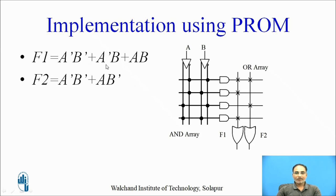The function f1 = A-bar B-bar + A-bar B + AB. You will see that the output of the first AND gate is A-bar B-bar — the fuse is intact. Output of the second AND gate is A-bar B — the fuse is intact. Output of the third AND gate is A B-bar, which is not part of f1, so this fuse is blown. The output of the fourth AND gate is AB, which is part of f1, so the fuse is intact. The output of the first OR gate is therefore our function f1 — only three fuses kept intact and one blown away.